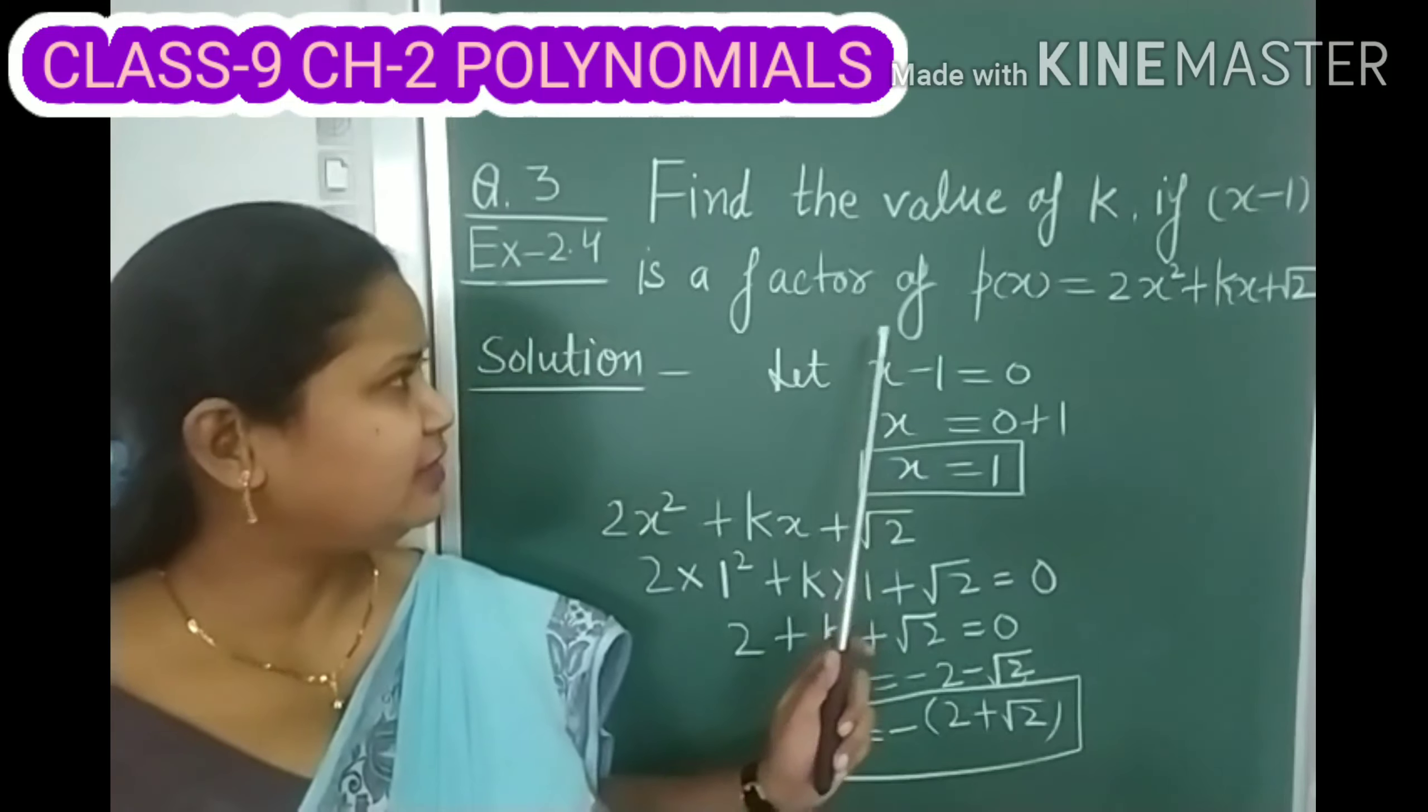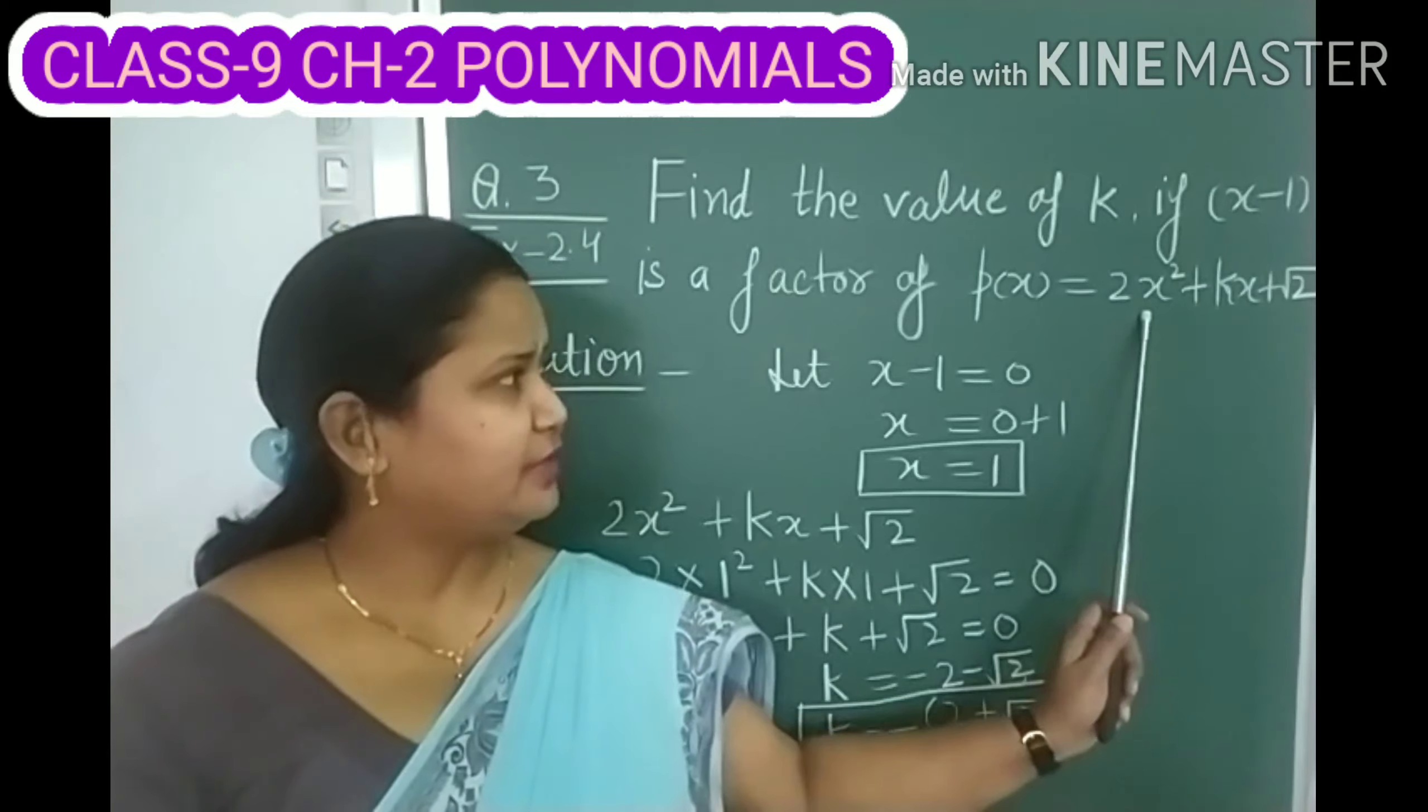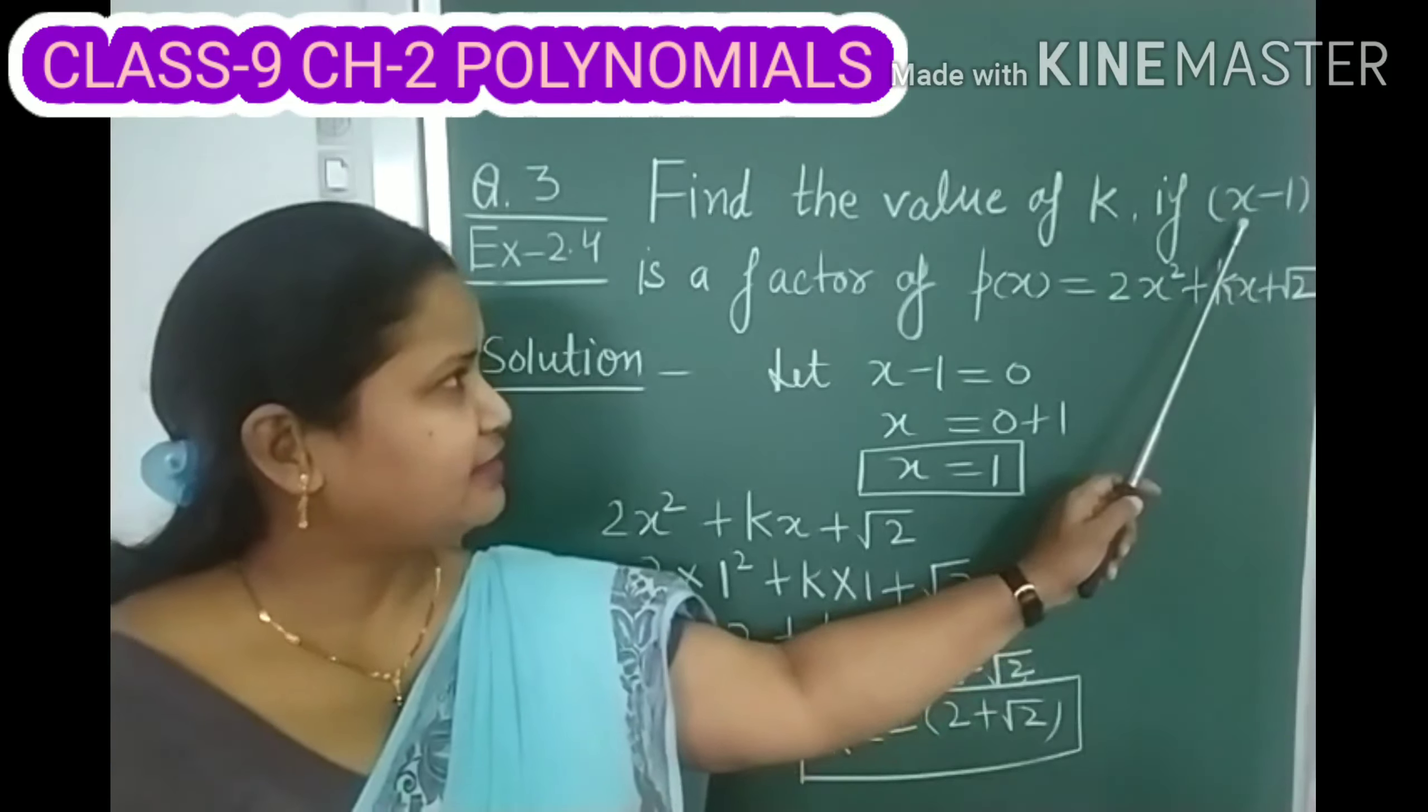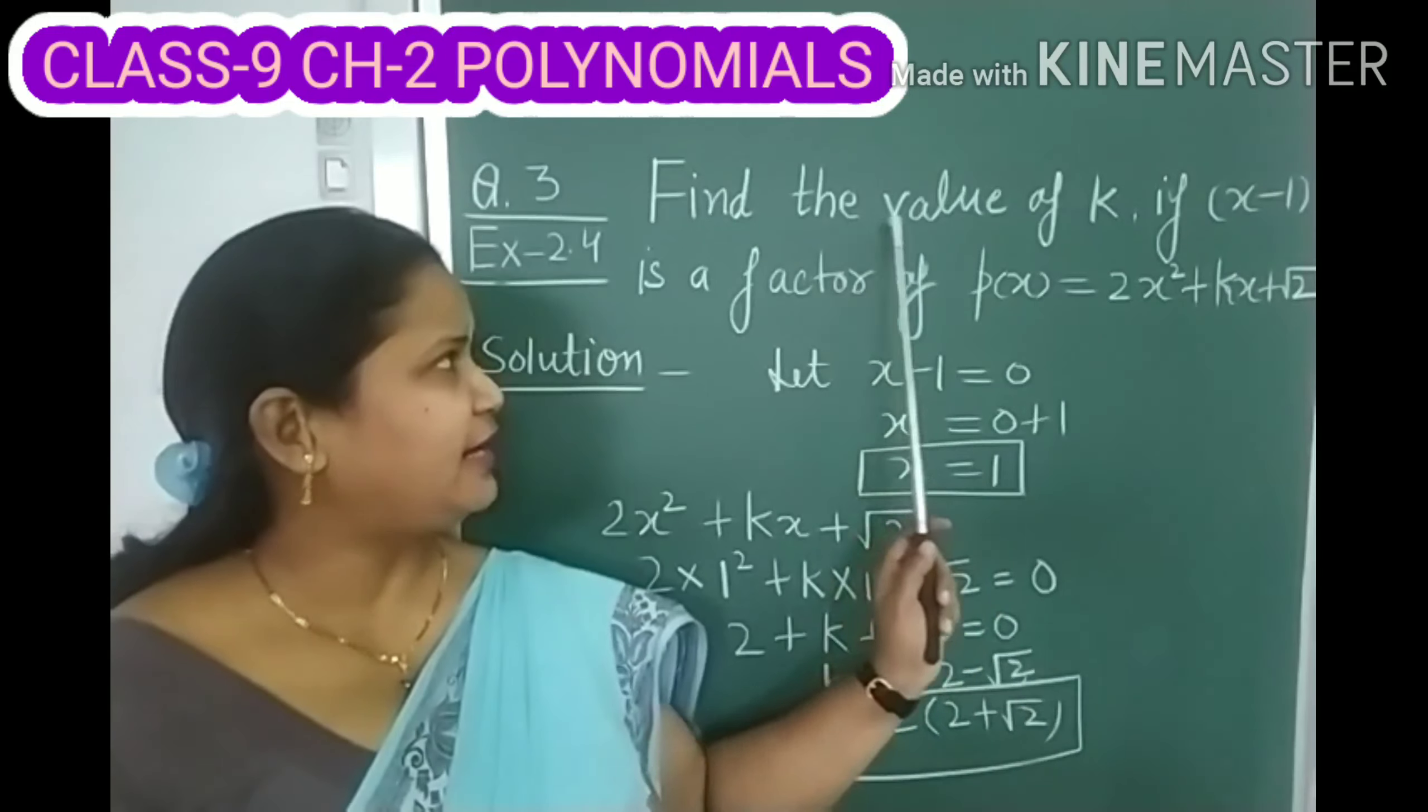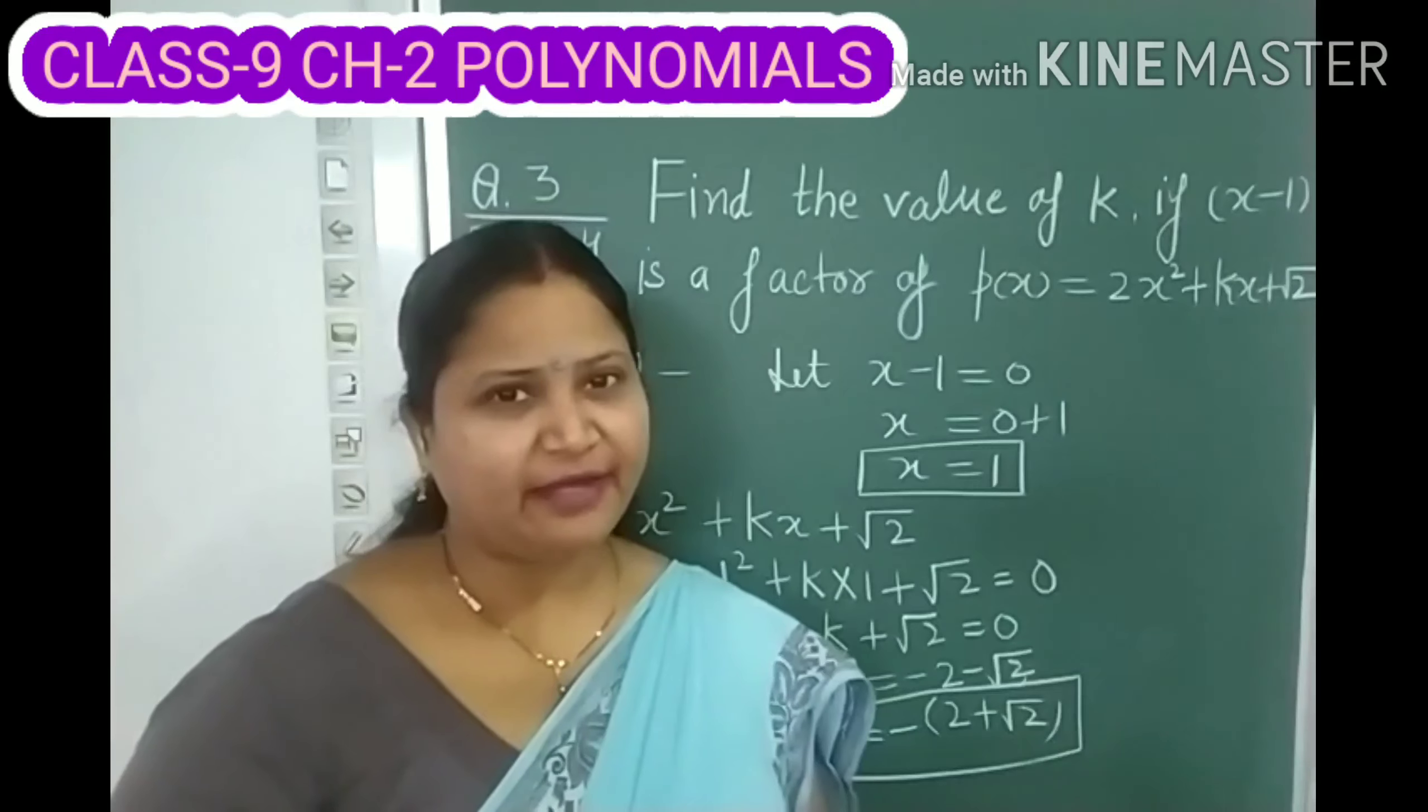Children, you are given a quadratic polynomial P(X) equals to 2X square plus KX plus root 2, and you are also given that X minus 1 is a factor of this polynomial P(X). So you are to find the value of K. Let us see how we can find the value.